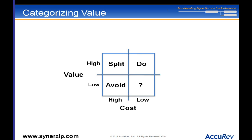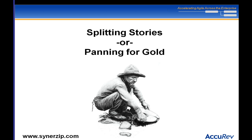The important part here is splitting user stories. The more I can split them down, the smaller I can make them, the easier it's going to be to make good decisions from an economic perspective. So let's talk about splitting stories, or as I like to call it, panning for gold.